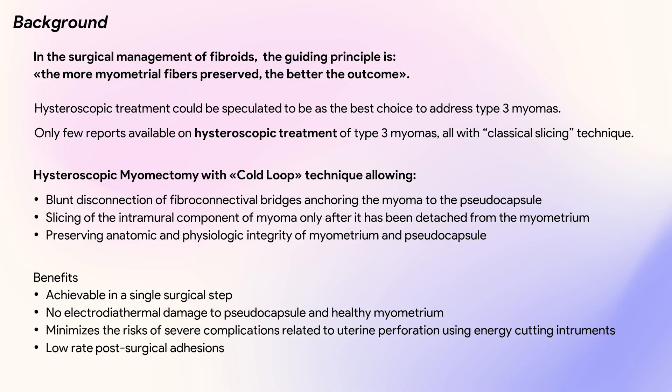Considering that preserving as many myometrial fibers as possible is the primary objective in treating myomas, hysteroscopic treatment could be speculated as the best choice for addressing type 3 myomas. However, there are only a few reports on hysteroscopic treatment for type 3 myomas, all of which utilize the classical slicing technique. The cold-loop hysteroscopic myomectomy is a safe and effective technique which allows complete removal of submucous myomas in a single surgical step by bluntly disconnecting the fiber connective bridges that anchor the myoma to the pseudo-capsule, minimizing damage to the surrounding healthy myometrium. This technique has been proven to be associated with a low rate of complications and post-surgical intracavitary adhesions.